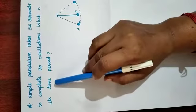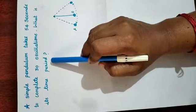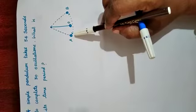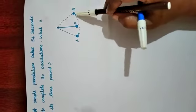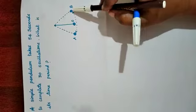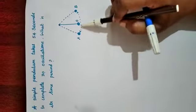Let us learn the time period of a simple pendulum. The time taken by the pendulum to complete one oscillation is called its time period.